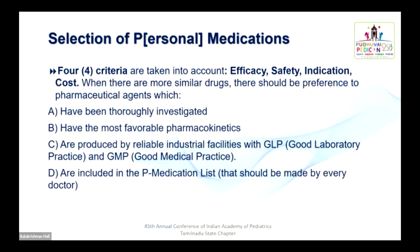How are you going to choose the drug? Mainly four criteria: efficacy, safety, indication, and the cost of the drug. When there are more similar drugs, preference should be given to pharmaceutical agents which have been thoroughly investigated, which have the most favorable pharmacokinetic properties, which are produced by reliable industrial facilities — that is, evidence-based medicine — and the drugs should be included in the P medication list.